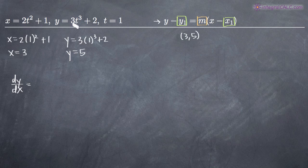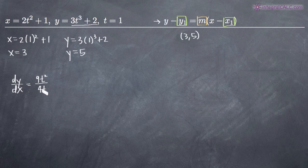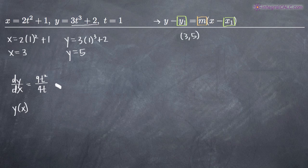We'll first take the derivative of 3t cubed plus 2, which gives us 9t squared — so dy equals 9t squared, and that goes in the numerator. Then the derivative of x, 2t squared plus 1, is 4t — so dx equals 4t, and that goes in the denominator. We've found dy/dx. Notice we can now cancel some t's from numerator and denominator, ending up with just 9t over 4.